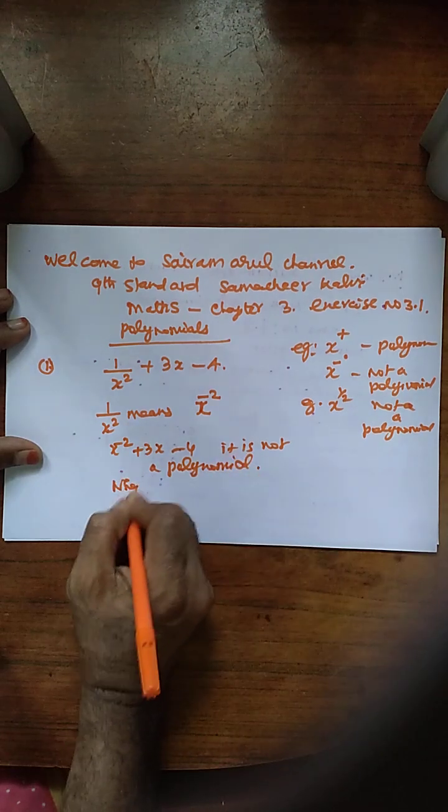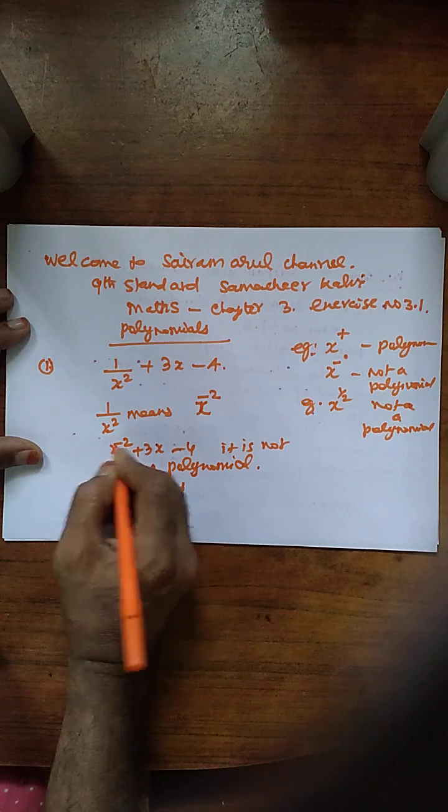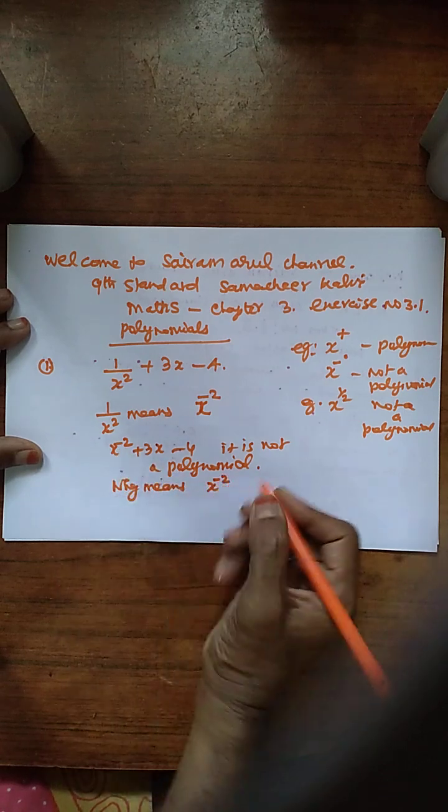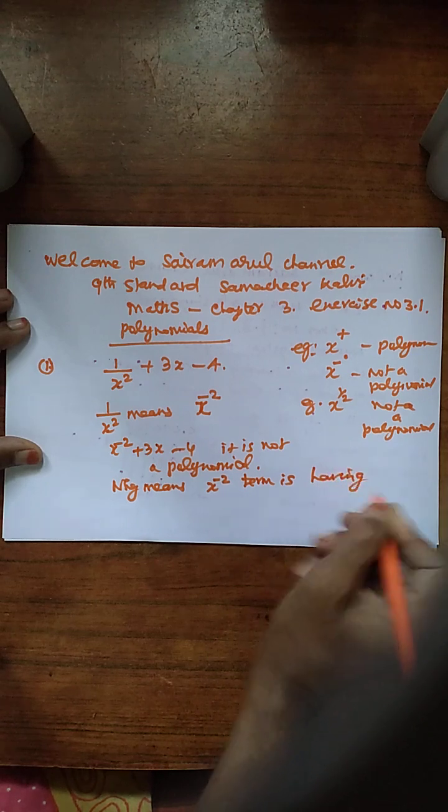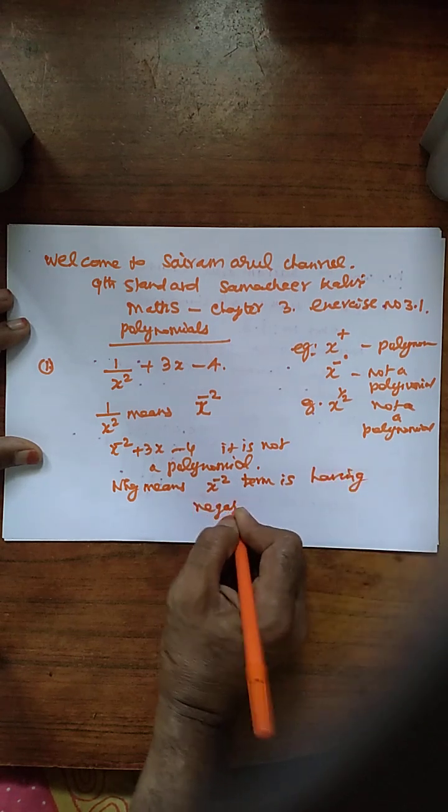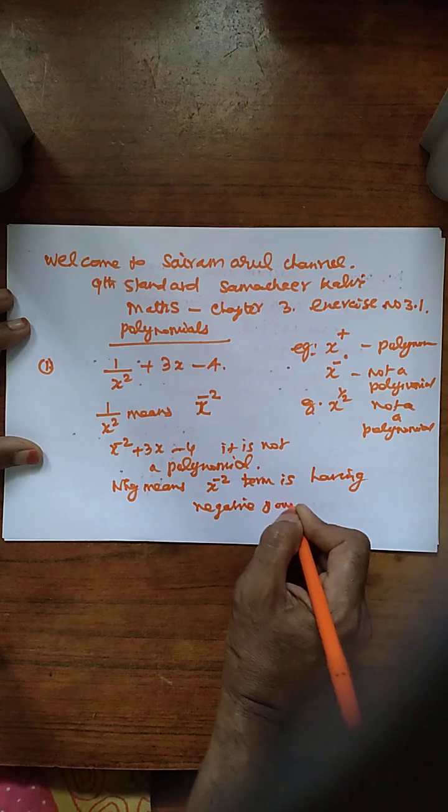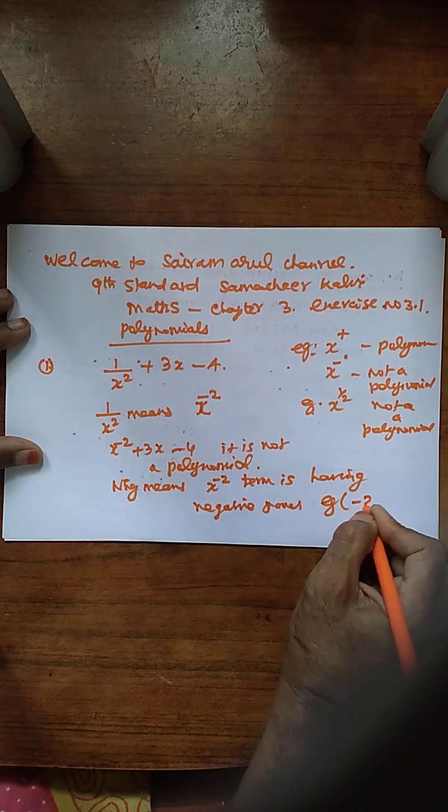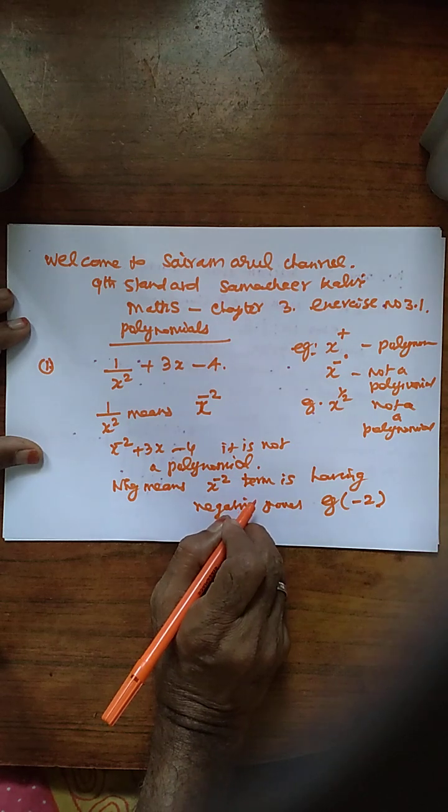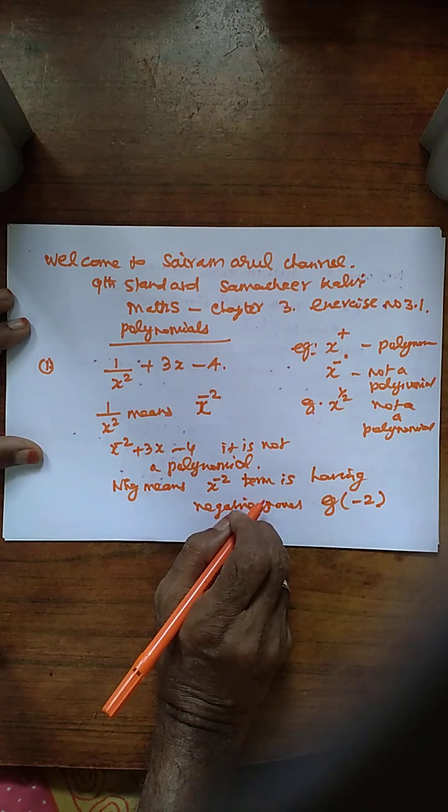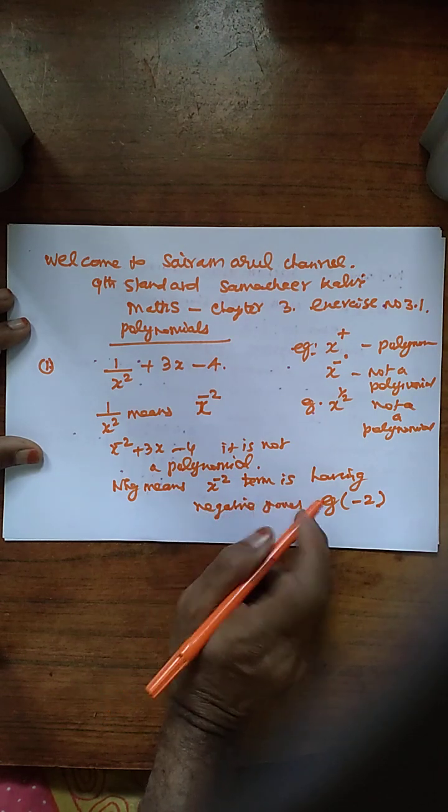Why? Because here x power minus 2 term is having negative power, negative power. For example, minus 2. So if it is a polynomial, it is not having negative power.